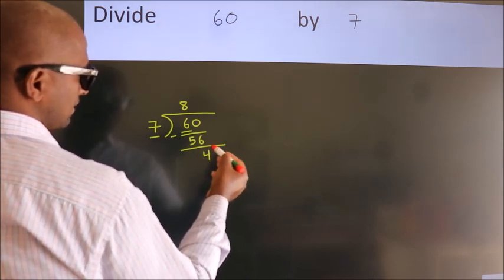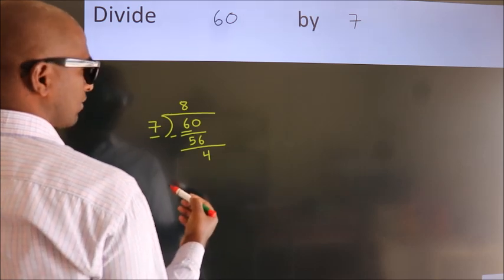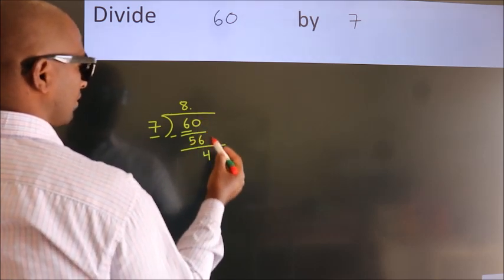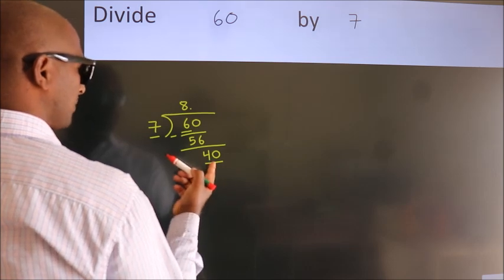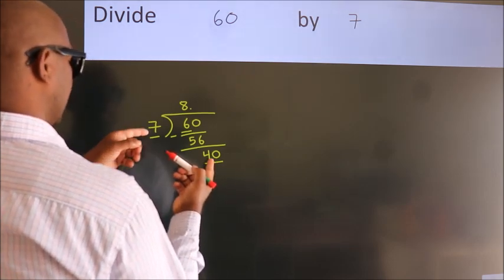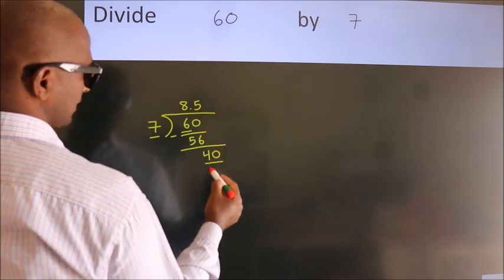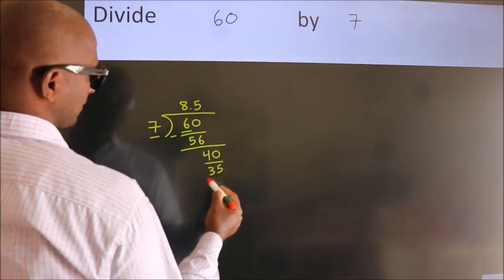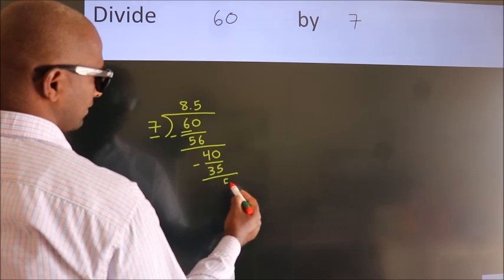After this, no more numbers to bring it down. So what we do is, we put dot take 0. So, 40. A number close to 40 in 7 table is 7, 5, 35. Now we subtract. We get 5.